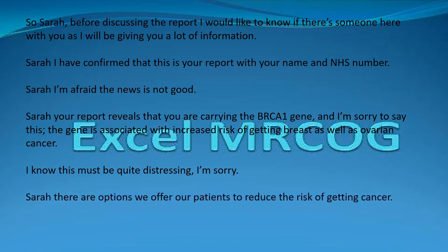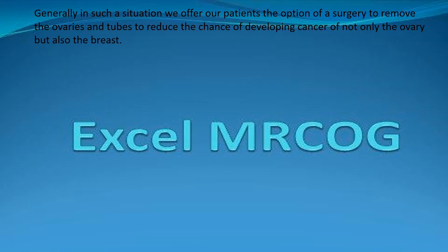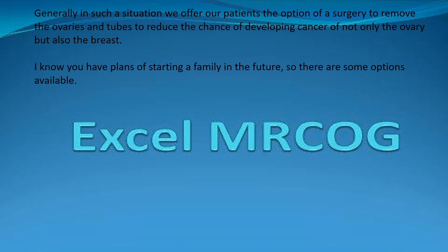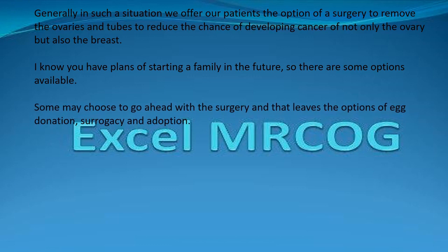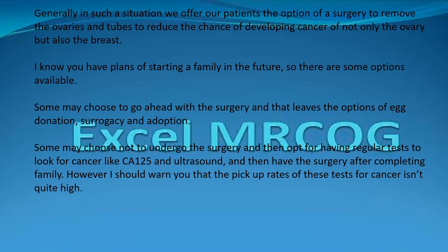Sarah, there are options we offer our patients to reduce the risk of getting cancer. Generally, in such a situation, we offer the option of a surgery to remove the ovaries and tubes to reduce the chance of developing cancer of not only the ovary but also the breast. I know you have plans of starting a family in the future, so there are some options available. Some may choose to go ahead with the surgery, which leaves the options of egg donation, surrogacy — wherein another woman would carry the pregnancy — and adoption. We would be referring you to a fertility centre. Some may choose not to undergo the surgery and instead opt for regular tests to look for cancer, like CA125 in your blood and ultrasound, and then have the surgery after completing family.